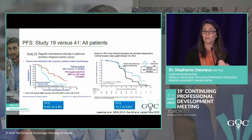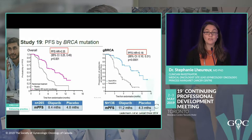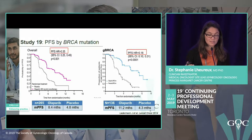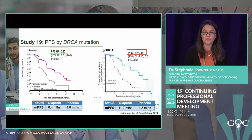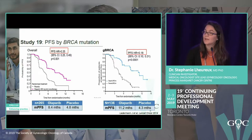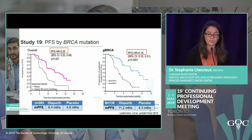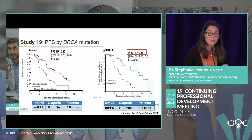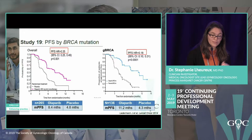A very important finding from Study 19 was looking at the BRCA subgroup. When analyzing patients with a BRCA mutation, the PFS was significantly increased with olaparib versus placebo from 4 months to 11 months. This very interesting result justified a phase 3 trial.